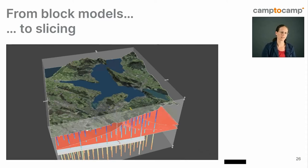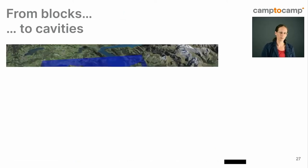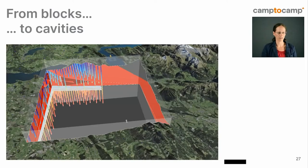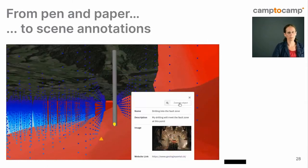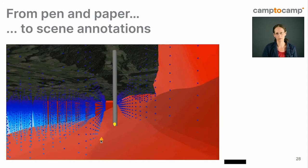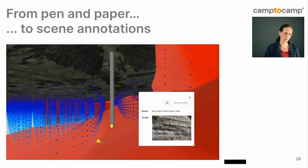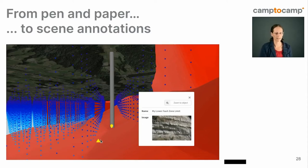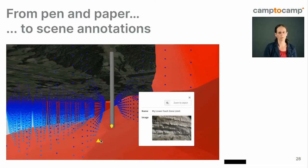Sometimes instead of a box model, you may want insight from your current position — so you can not only slice a model but also cut out a rectangular place. For example, at a borehole location with temperature points and fault layers, you can annotate specific places, add images or website links to record what specific findings you've made at those locations.